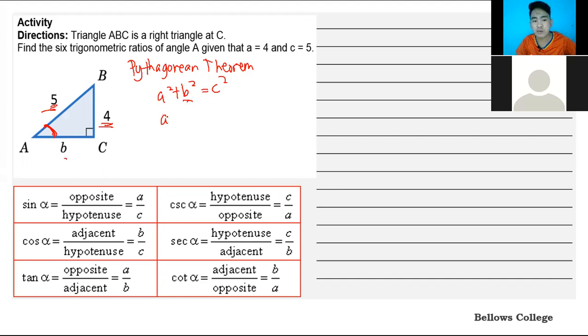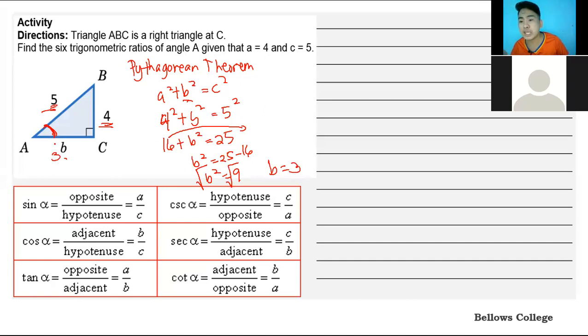4 squared plus B squared equals 5 squared. We have 16 plus B squared equals 25. Transpose 16 to the right side: B squared equals 25 minus 16, so B squared equals 9. To get the value of B, we take the square root. The square root of 9 is 3, so B equals 3. Now we have complete measurements of the sides and can get the trigonometric ratios.